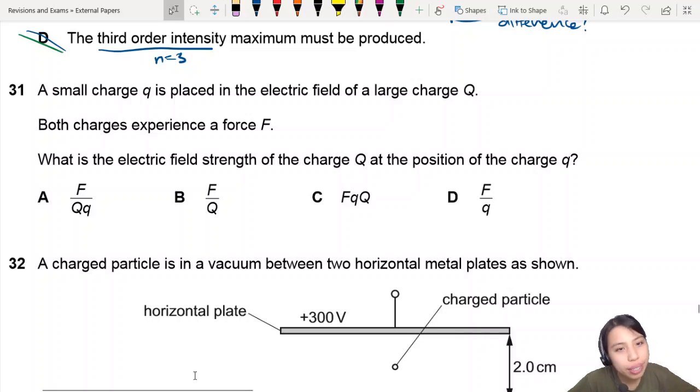MJ 20, question 31. Now we are looking at the electric field question. Oh, by the way, this question has appeared before in the past year, like before MJ 20. So it's a repeat.